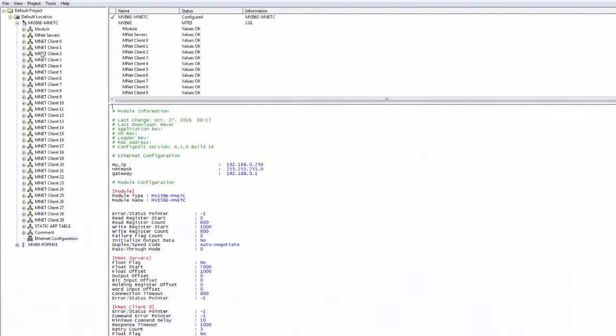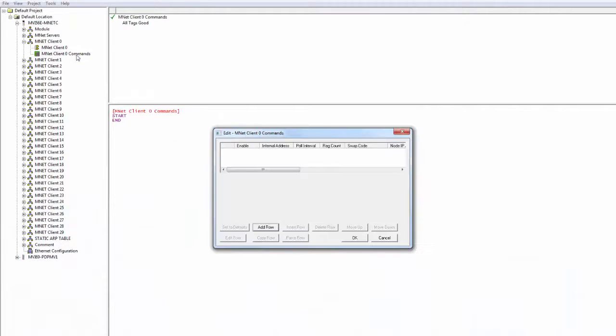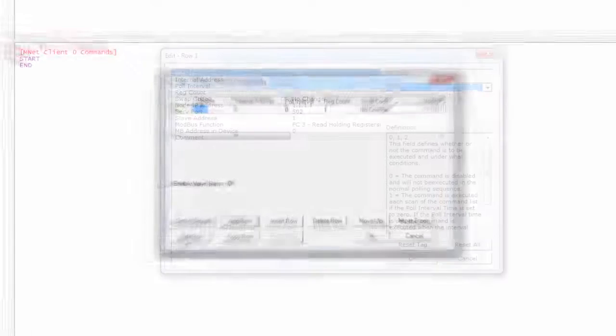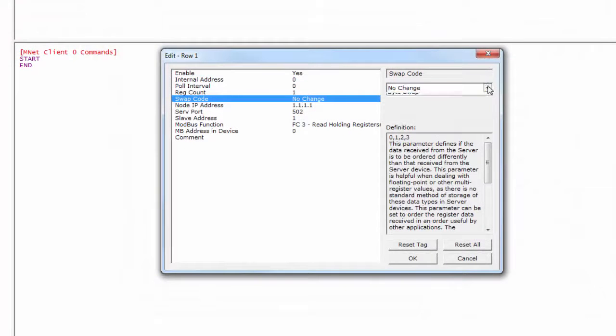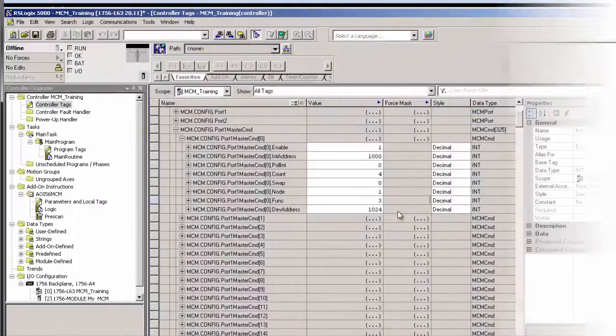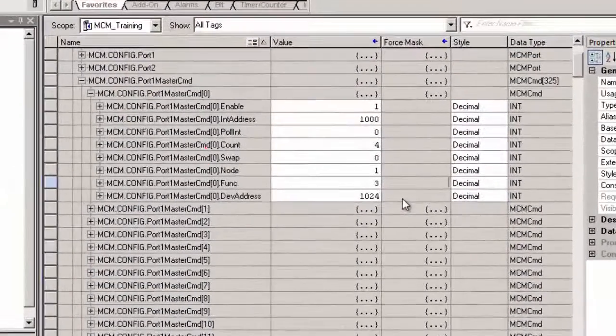In ProSoft Configuration Builder, when setting up your client commands, you can use the swap code function to swap words, bytes, or words and bytes. Or if you're using RSLogix 5000, when you set up the command simply enter one for swap.